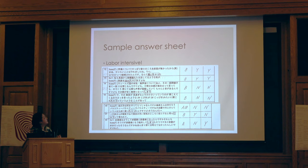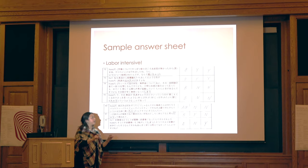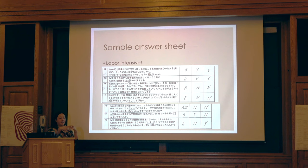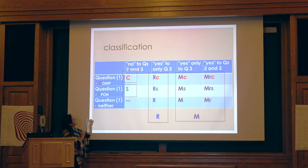This is a sample answer sheet by one informant. This is the first question, second question, third question — they combine the result. Then I label the type: referential type, subjectivity type, inter-subjectivity type.